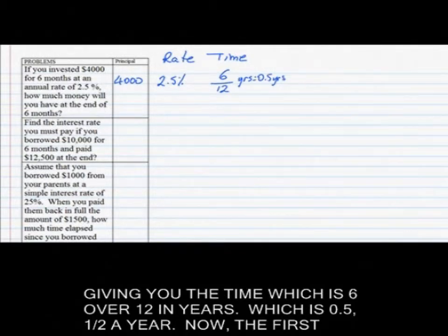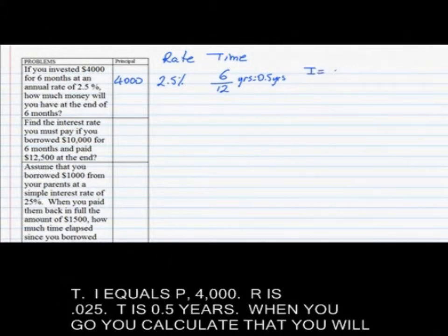The first thing we need to do is to calculate the interest you'll make. So that's going to be I equals PRT, I equals P which is 4000, R is 0.025, T is 0.5 years. When you calculate that, you will be getting 4,000 times 0.025 times 0.5, that will give you 50.